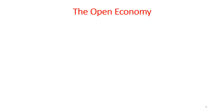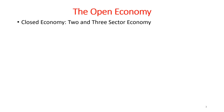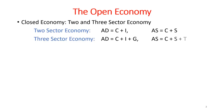As we already know, a closed economy consists of two or three sector economy. In a two sector economy, aggregate demand is equal to C plus I and aggregate supply is equal to C plus S. Whereas in a three sector economy, aggregate demand is equal to C plus I plus G and aggregate supply is equal to C plus S plus T.